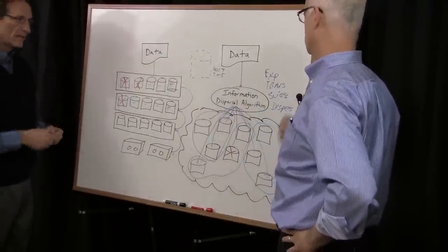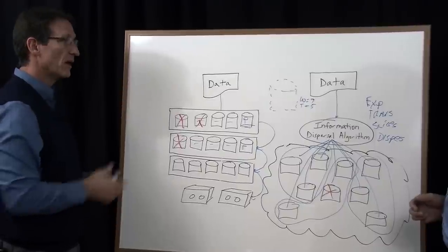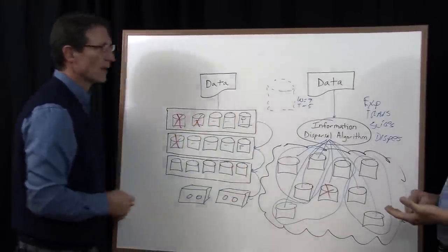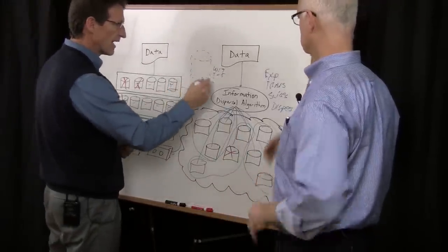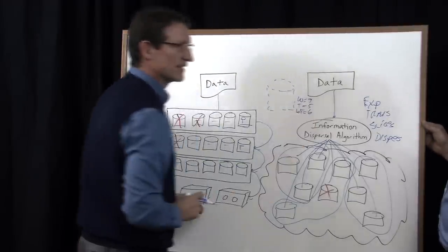So you get significant levels of reliability over a traditional storage system, but you're not making copies. You're taking the data and slicing it up and spreading it out. So there's one more parameter that you have to set, which is very important, and that is what's called a write threshold, and let's say that's six in this example.